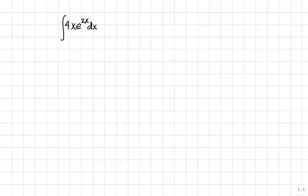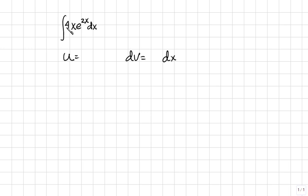To integrate by parts, we need to select from our expression 4x e to the 2x dx part of this to be u, and the rest will be dv, which contains the dx. We'll use u to be 4x and let dv be the remainder, which would be e to the 2x. On the left side, we need to find du, so the derivative of 4x will become 4 dx.